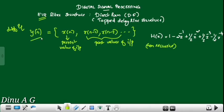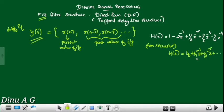The second case: the system function H(z). The general form of H(z) is: B0 plus B1·z^(-1) plus B2·z^(-2), and so on. Here B0, B1, B2 correspond to the input coefficients.